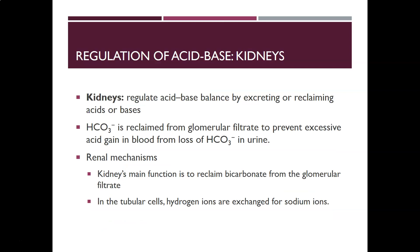The other way we modify acid-base balance is through the kidneys. The kidneys regulate acid-base balance by either excreting or reclaiming acids or bases as needed. Their main job is usually to reclaim bicarbonate from the glomerular filtrate to prevent excessive acid gain in the blood from losing too much bicarbonate in the urine. There is a system in place to reclaim bicarbonate from the filtrate and return it to the blood.